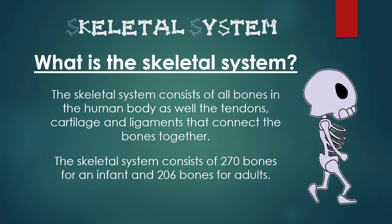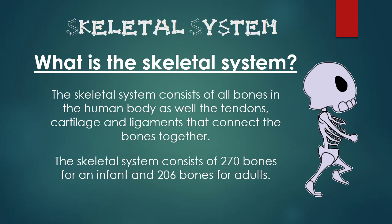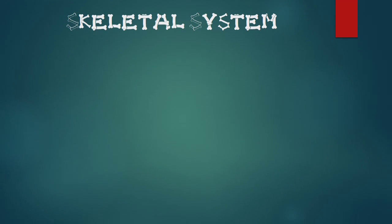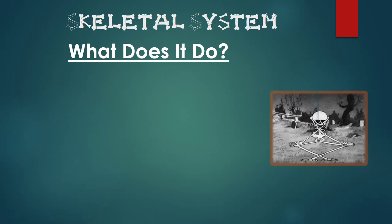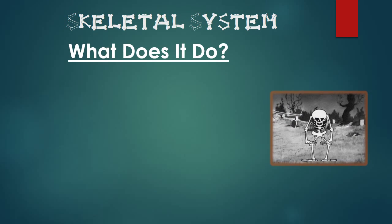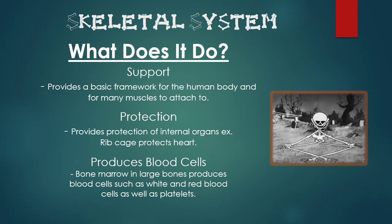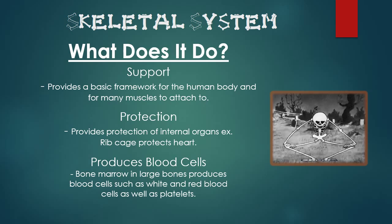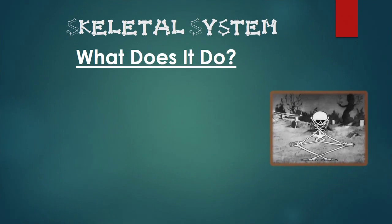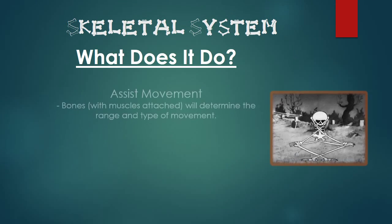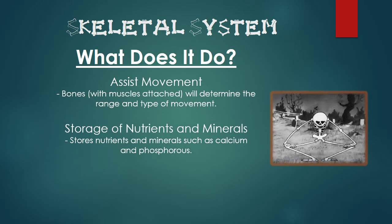The skeletal system consists of 270 bones for an infant and 206 bones for an adult. So what does it do? The skeletal system provides support, protection and produces blood cells. The skeletal system also assists in movement and stores nutrients and minerals.